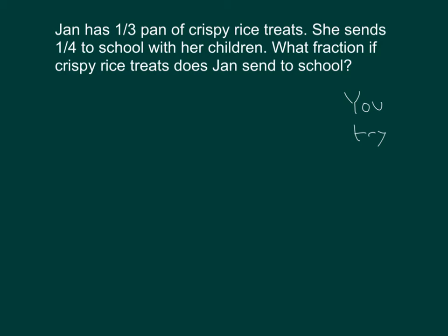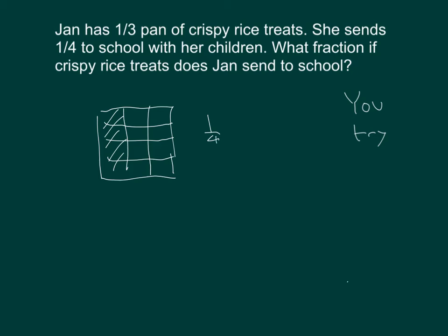It's your turn to try. Starting with one third of a pan of crispy rice treats, draw an area model. Then take one fourth of one third. One fourth of one third equals one twelfth — same as one fourth times one third, which equals one twelfth. So she sends one twelfth of a pan of crispy rice treats to school.